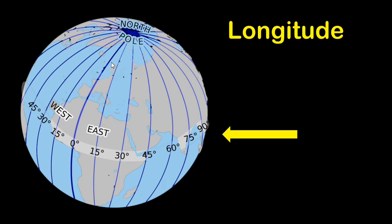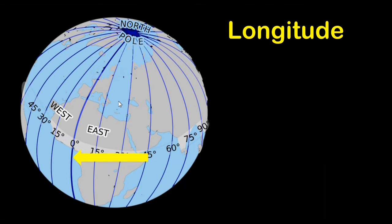Lines of longitude run north and south and measure how far east or west a location is from an arbitrary line of longitude called the prime meridian, which is given the location of 0 degrees. Notice that lines of longitude are all the same size, but their distance apart decreases the farther north you get. This means that lines of longitude are always running in a true north-south orientation, and they are the only reliable true north system we use in SAR.